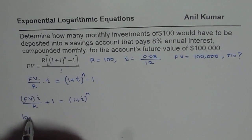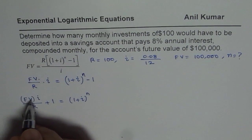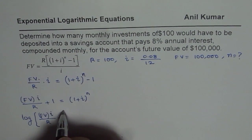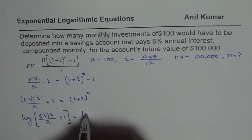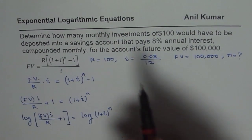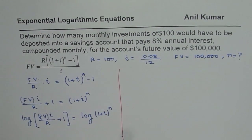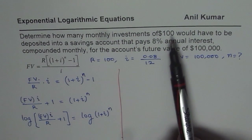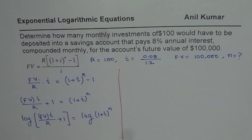When we take log, we get log of FV times i divided by R plus 1 equals log of (1+i)^n. So that is the next step. I am providing you with a very general solution which could be used in such situations.